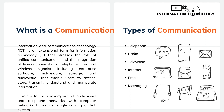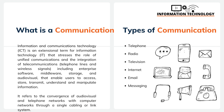Information Communication Technology is basically how you use different kinds of communication application tools such as your telephone, radio, television, internet, email and messaging tools online to communicate from one person to another person, one system to another system. It refers to the convergence of audiovisual and telephonic networks with computer networks through a signal, cabling or a link system.